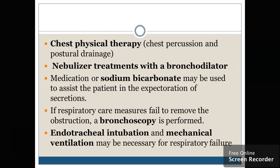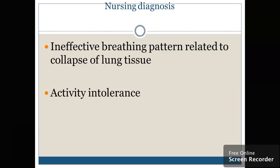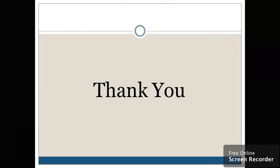Bronchoscopy is used to visualize the bronchus where the obstruction occurs, to determine if there is any kind of obstruction. Endotracheal intubation or mechanical ventilation may be given to the patient. Thoracentesis can be done — it involves removal of fluid by needle aspiration or insertion of a chest tube if there is compression. Nursing diagnosis: ineffective breathing pattern related to collapse of the lung tissue; activity intolerance. Thank you and have a nice day — if you have any query, kindly feel free to contact me.